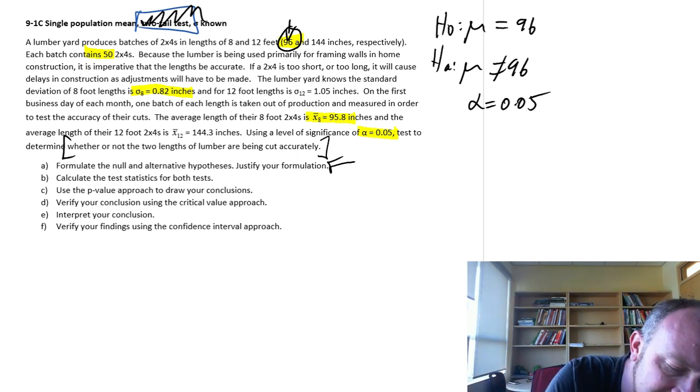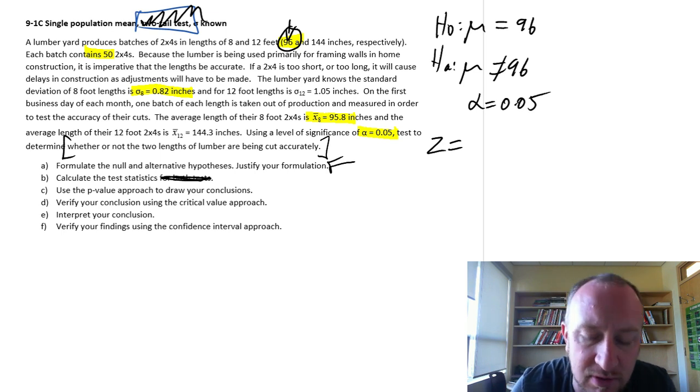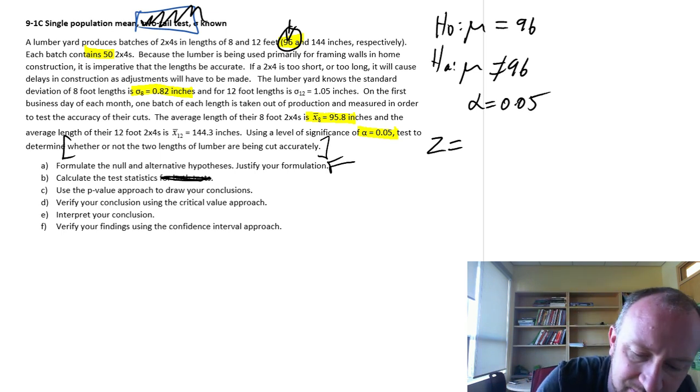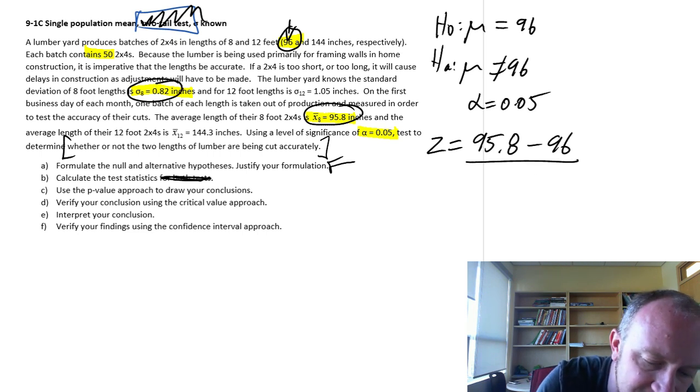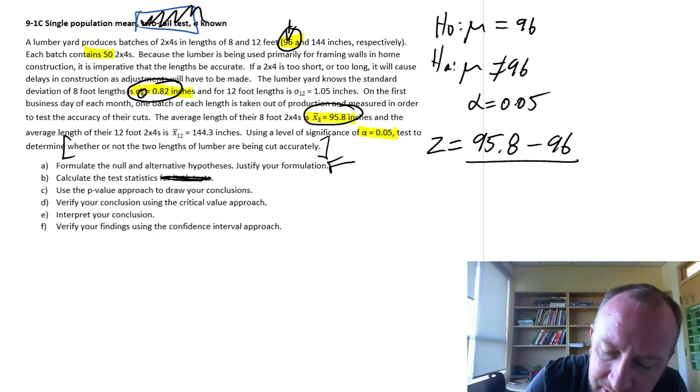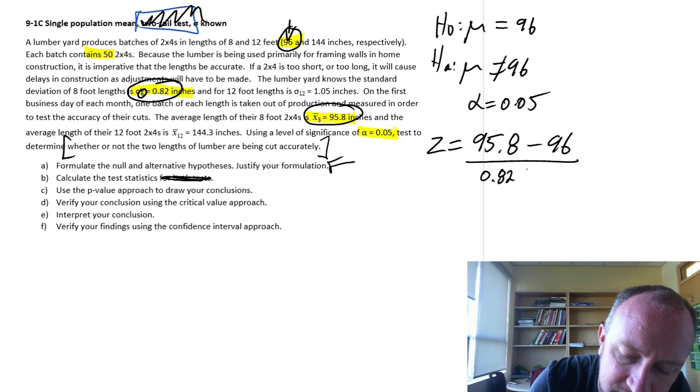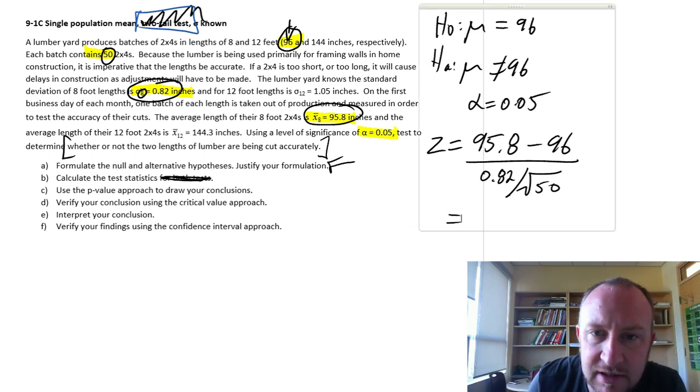So now we want to calculate our test statistic. I'll get rid of this both tests because we're going to do them separately. So for the 8 foot, or the 96 inch 2x4s, my sample mean was right here. So this is 95.8 inches minus 96, divided by that standard deviation for the 8 foot, 0.82, divided by the square root. Our sample size was 50. So let's get our calculator out.